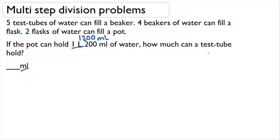Now I'm going to set up the rest of my formulas. Straight from the problem I can see that five test tubes are equal to one beaker, four beakers are equal to one flask, two flasks are equal to one pot, and then one pot is equal to 1,200 milliliters.